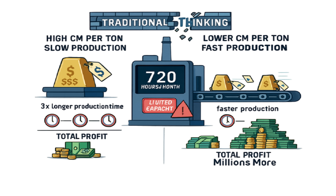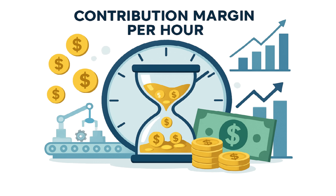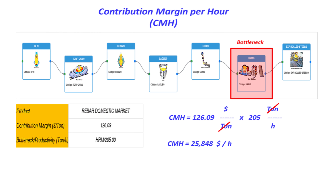And that brings us to the game changer: contribution margin per hour, CMH. It's basically asking, for every hour that my most critical bottleneck piece of equipment is running, how much contribution margin am I generating? So it's not just the margin, but how fast you earn that margin. Mathematically, you take the CM per ton and multiply it by the productivity — how many tons per hour that machine can make of that specific product. CM times tons per hour.